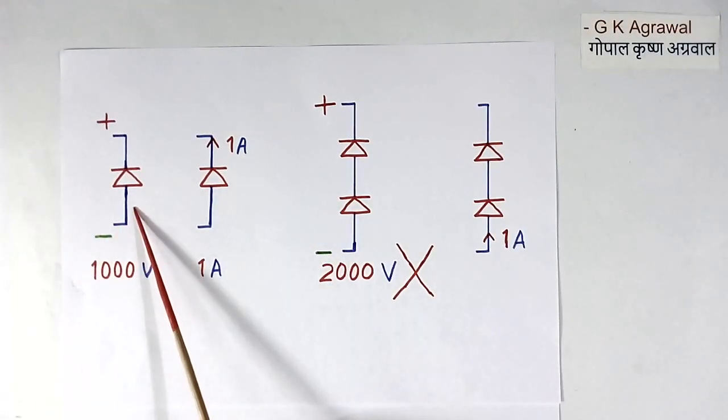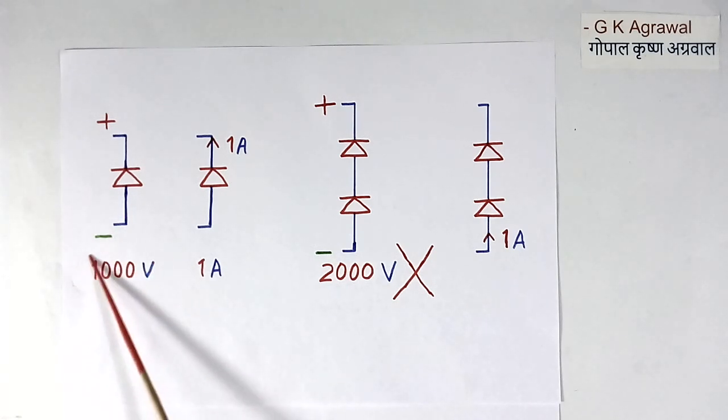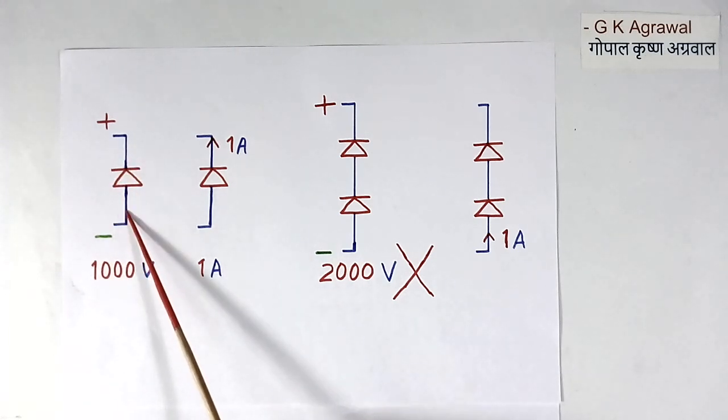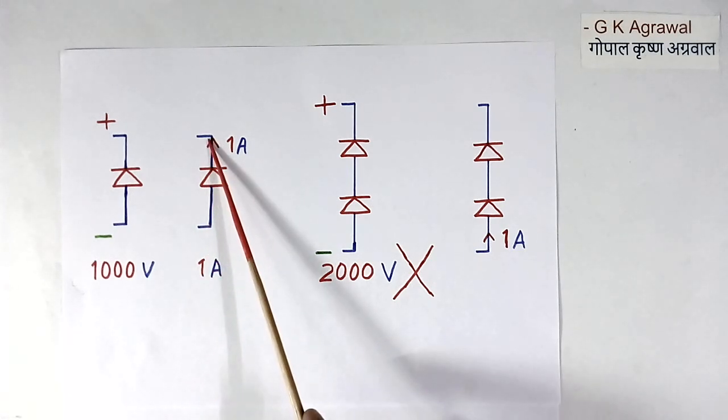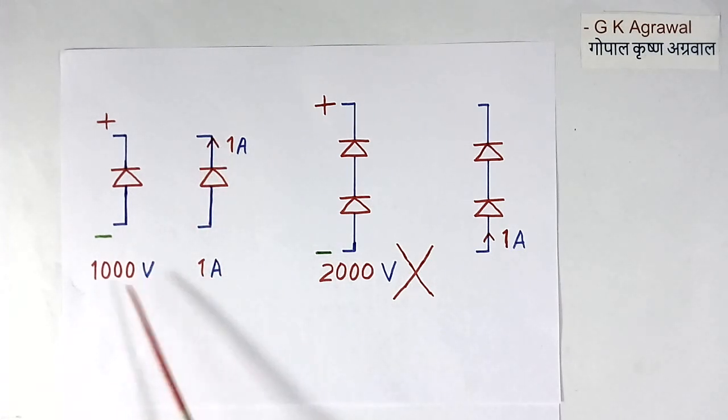Here, I have shown one diode with a rating of 1000 volt and 1 ampere. 1000 volt is the reverse voltage which diode can take, and 1 ampere is the forward current. This both will never come together.